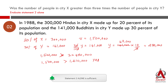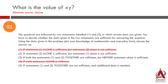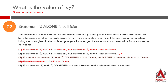Statement 2 alone is sufficient. Since Statement 1 was not sufficient, we eliminate answer choices 1 and 4. Since Statement 2 is sufficient, we also eliminate 3 and 5. Therefore, choice 2 is the answer.